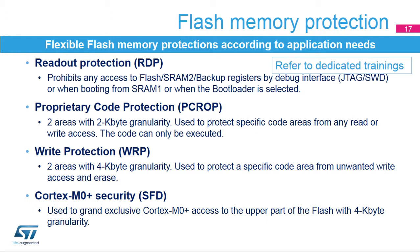Several flash memory options can be configured using the option bytes. The readout protection is configured using the RDP option byte, which prohibits any access to the flash memory, the SRAM2 and the backup registers by the debug interface, or when booting from SRAM1 or when the bootloader is selected. The proprietary code protection is configured using the PC-ROP option bytes. These options protect specific code areas from any read or write access; the code can only be executed. The protected areas can be defined with two kilobyte granularity and two areas can be defined. The write protection is configured using the WRP option bytes, protecting specific code areas from unwanted write access and erase, with four kilobyte granularity.